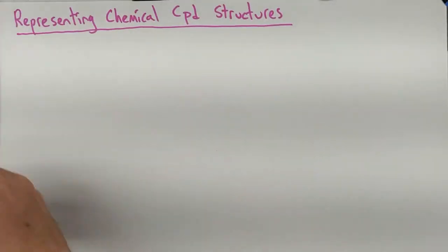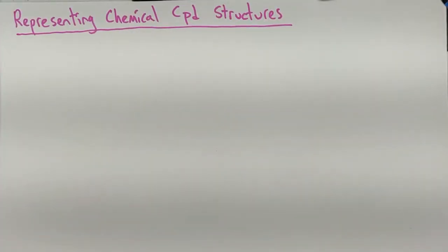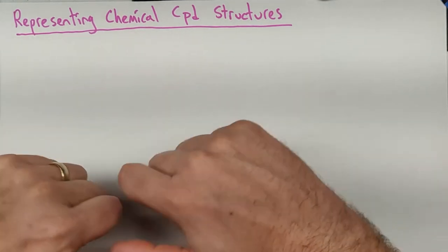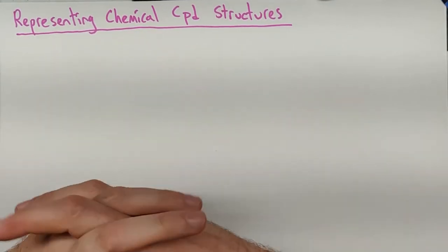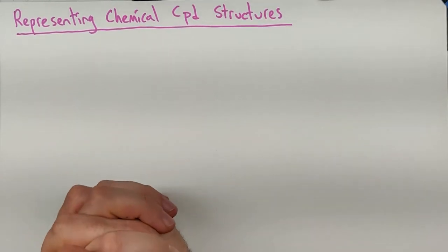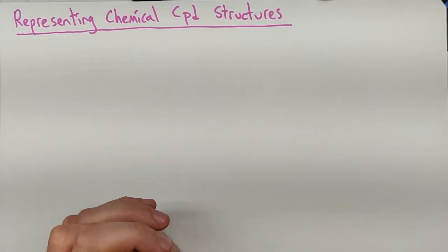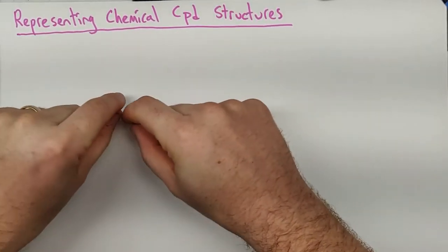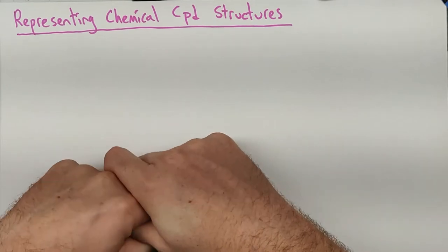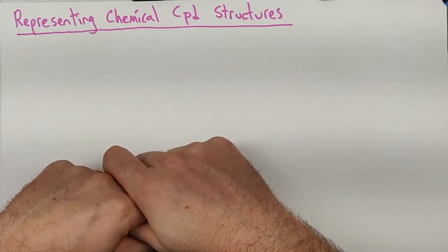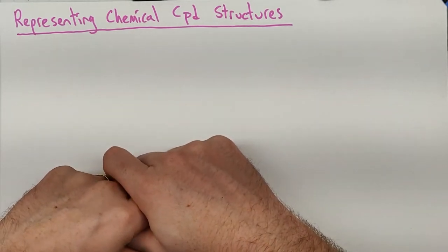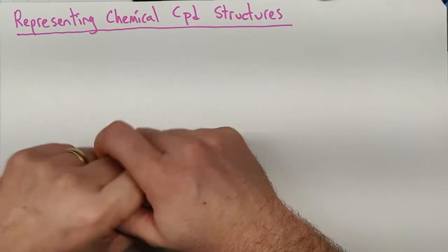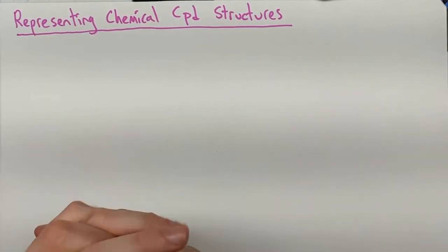I tell my students that the more I teach about structures, the more interesting I find it. The nuances of how valence electron locations determine chemical properties which form these structures, then once the structures are formed, the arrangement of the particles in three-dimensional space determines a lot of physical properties, like melting point, boiling point, and vapor pressure. Really neat stuff.